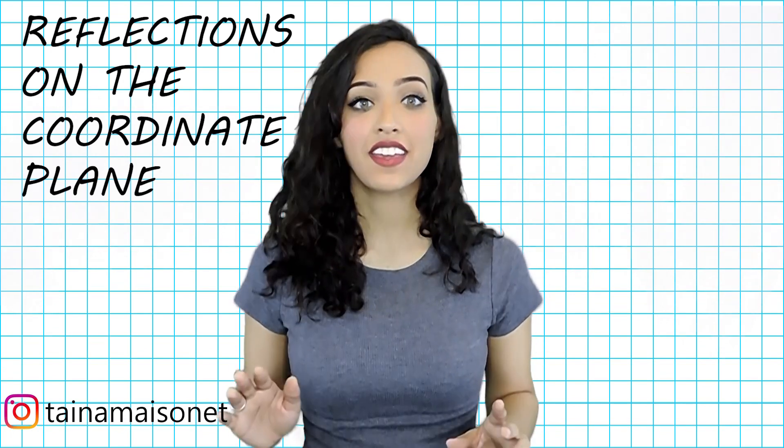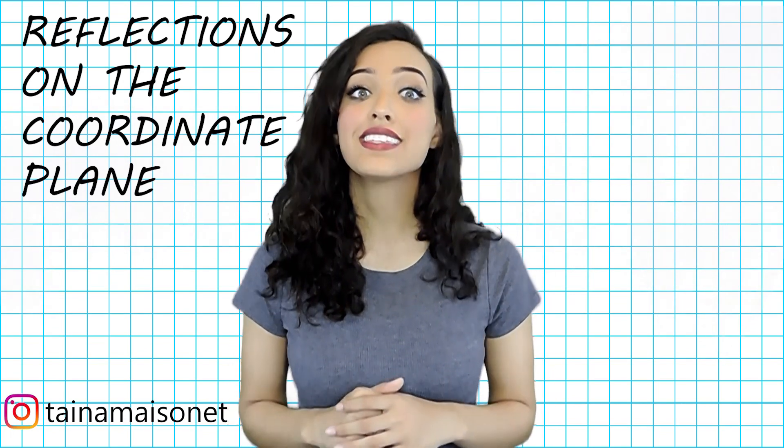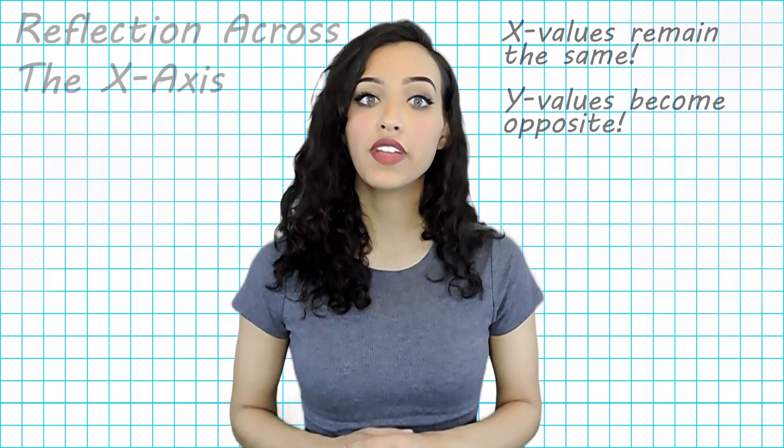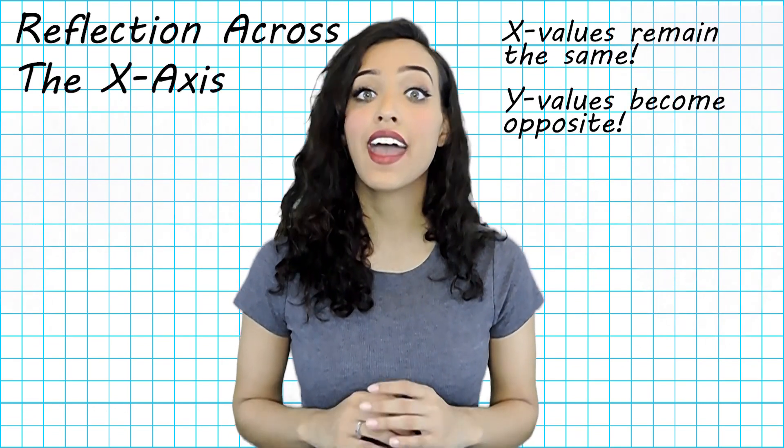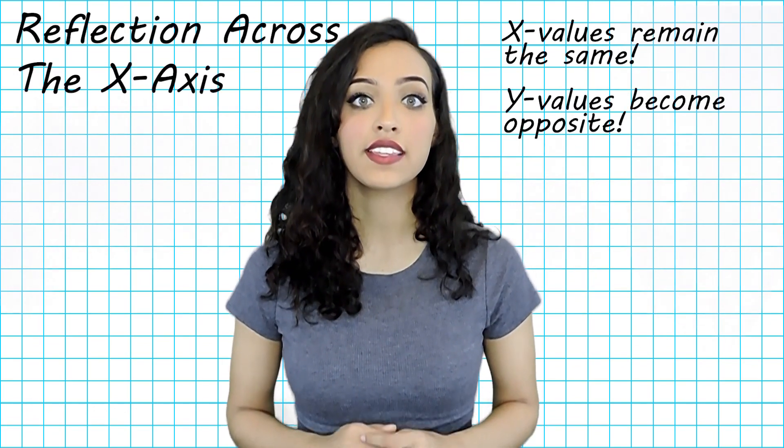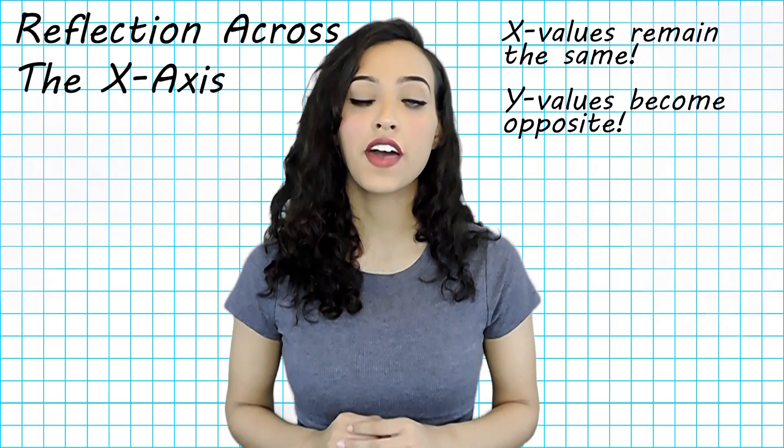When reflecting anything across the x or y axis, there is a simple rule that we can follow. Whenever reflecting across the x axis, the x values of the original coordinates stay the same and the y values become opposite.